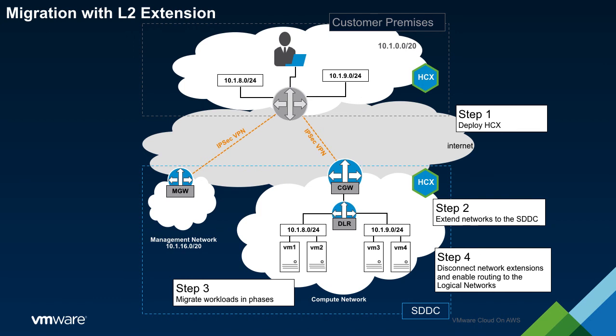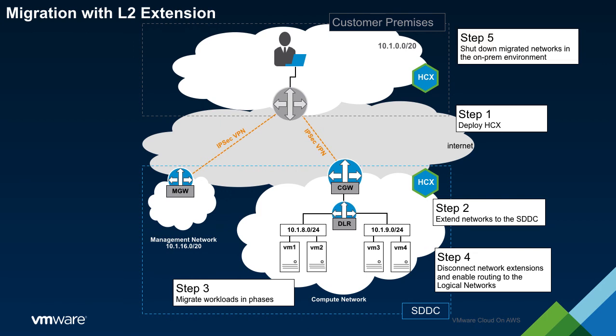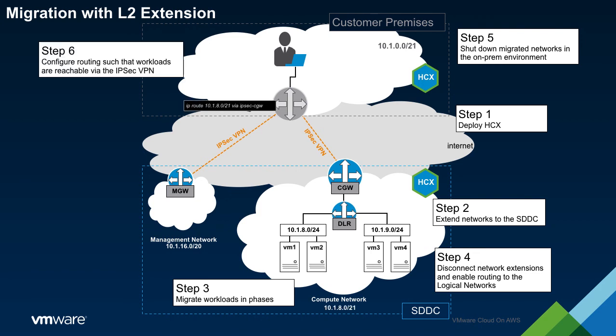The SDDC is now active. The next step is to shut down the networks within the on-prem environment. The compute network of the SDDC must then be made reachable from the on-prem environment; we'll use static routes to accomplish this. The security policy of the CGW must also be adjusted to allow the connectivity.